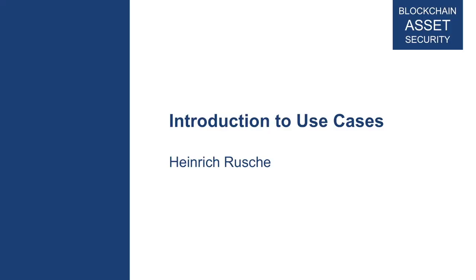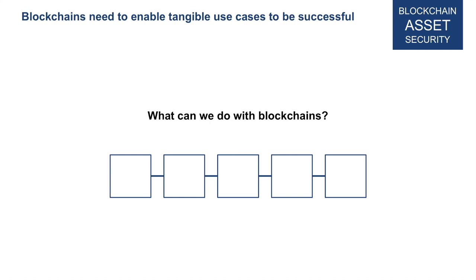In this section we will focus on use cases — different kinds of applications and things you can actually build with blockchains — and explain how this will be useful for industry, people, and businesses in general. Blockchains need to enable tangible use cases to be successful. Blockchain is an exciting technology, but if we cannot really do something with it, it will remain unimportant and not be relevant in the future. So what can we actually do with blockchains?